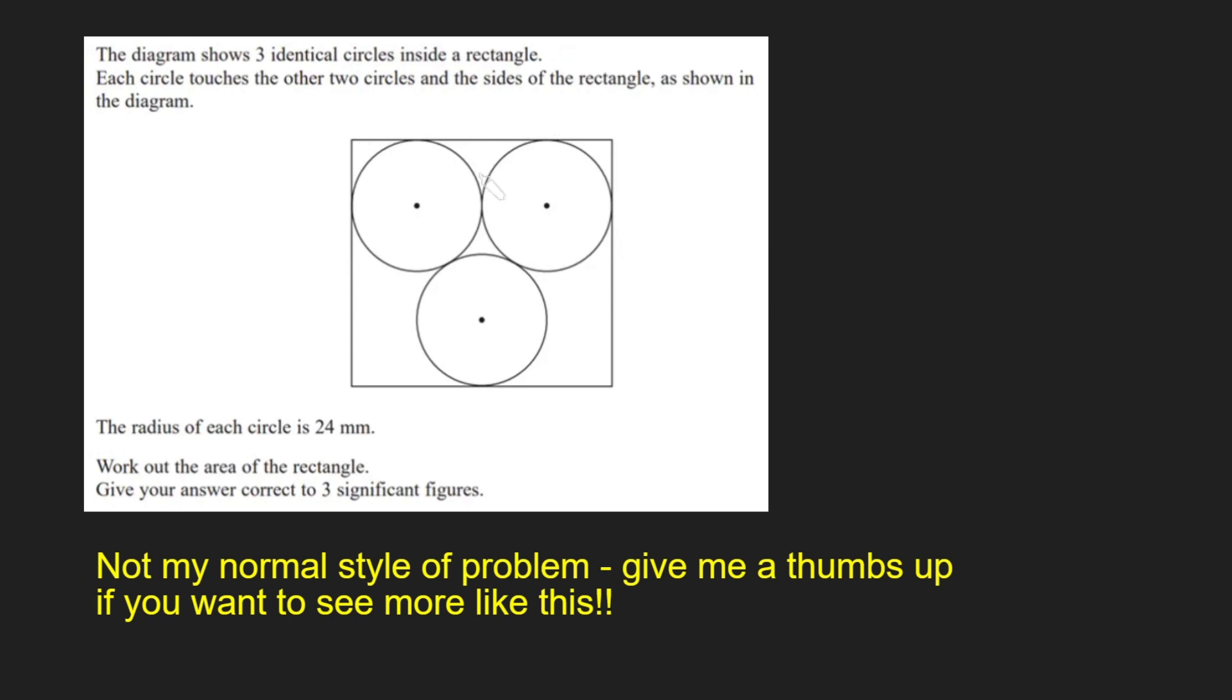What have we got? We've got three identical circles in a rectangle. Each circle touches the other two circles and the sides of the rectangle, as shown in the diagram. The radius of each circle is 24mm. We want to work out the area of the rectangle. It says to give our answer to three significant figures. I'm not going to be doing that. We're going to be giving an exact answer here. So if you're going to have a go at this problem, pause the video now and give it a go for yourself.